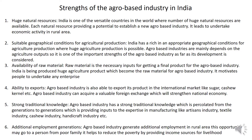The second strength is suitable geographical conditions for agricultural production. Geographical conditions in India allow for huge agricultural production — any type of crop can be grown because of the climatic conditions. Since agro-based industries mainly depend on agricultural output, this is an important strength for their development.